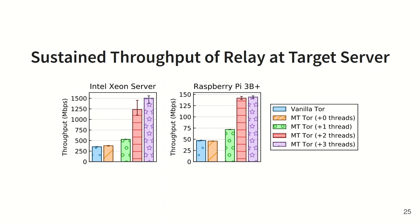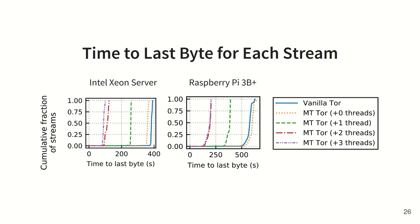Since the Raspberry Pi uses Ethernet over USB 2, the multi-threaded relay with two or three threads reached the throughput limit of its network interface. It's likely that we'd see even better performance on newer Raspberry Pis that use regular Gigabit Ethernet. We also measured the time to last byte for each stream, which is the time required to complete each transfer, and as expected from the higher throughput, we found that the streams completed much faster when using the multi-threaded relay. In each configuration, all streams completed around the same time, showing that our implementation didn't cause unexpected effects in circuit prioritization.